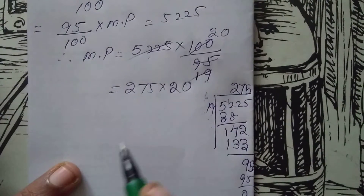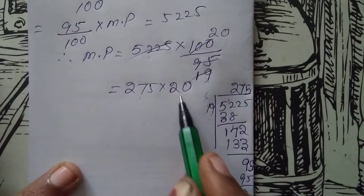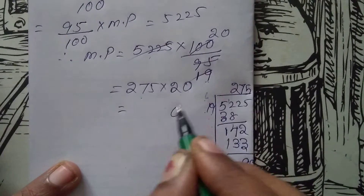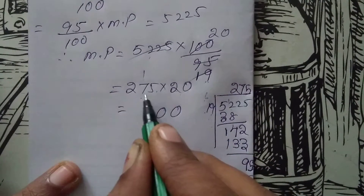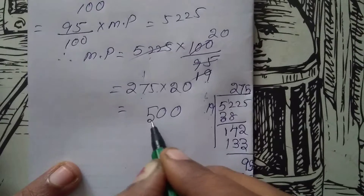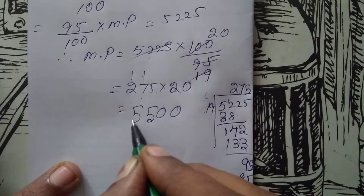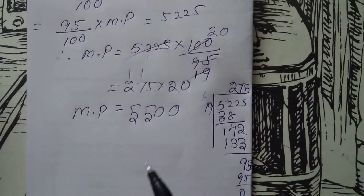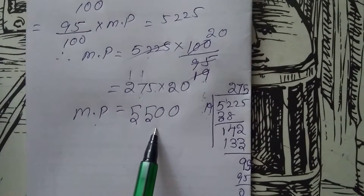19 goes into 5,225 exactly 275 times, multiplied by the numerator 20. So we get: 2 fives are 10, carry 1; 2 sevens are 14 plus 1 is 15, carry 1; 2 twos are 4 plus 1 is 5. So this is our marked price: 5,500.